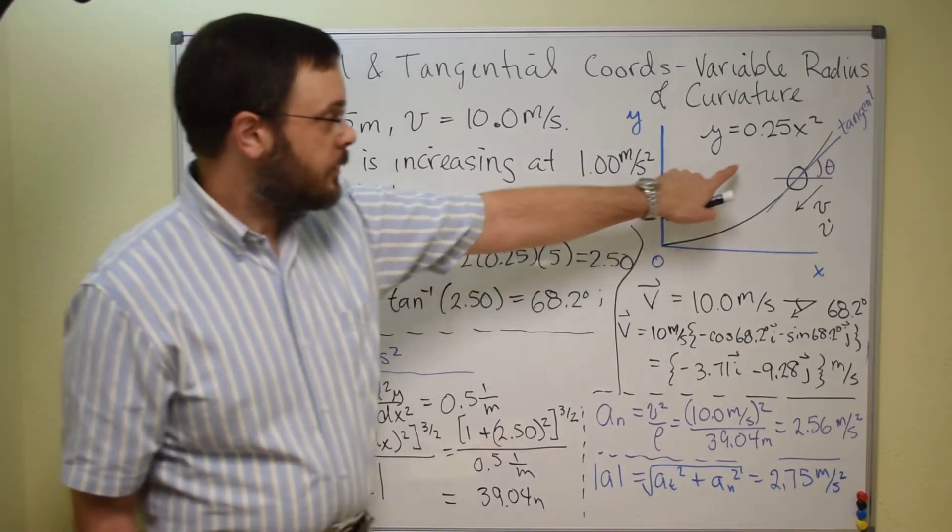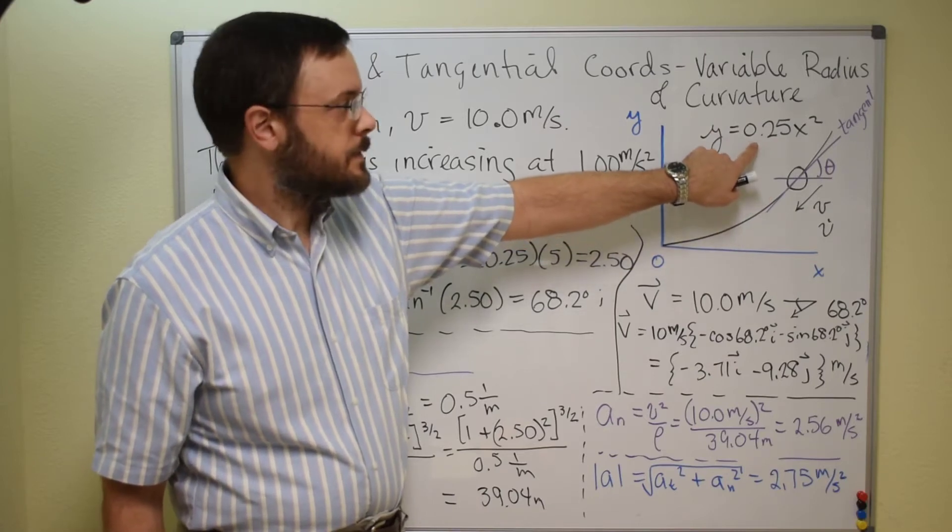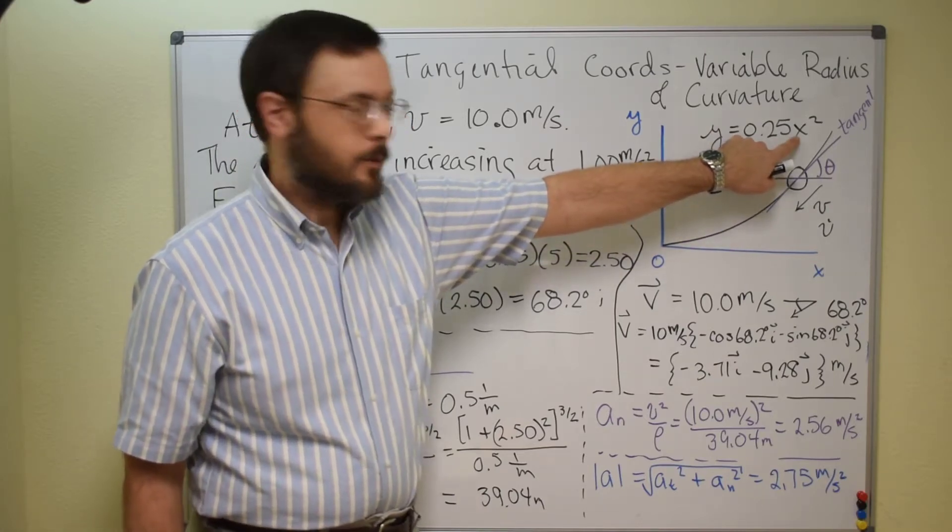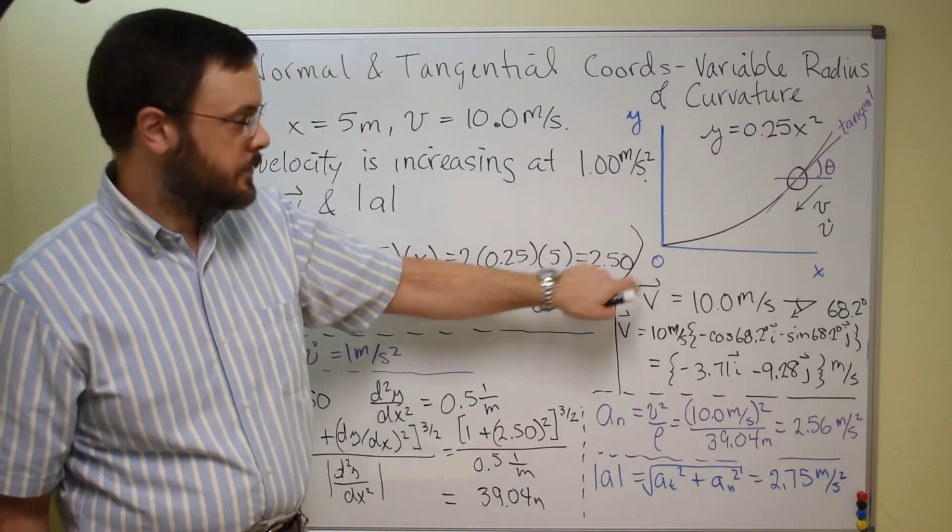So here's our curve that our particle is moving along, so y is equal to 0.25 times x squared. There's the x-axis, the y-axis, and then the origin fixed point.